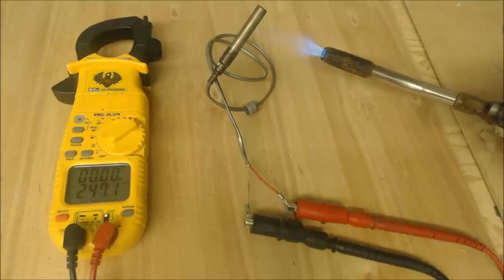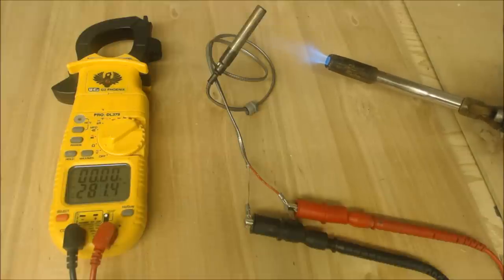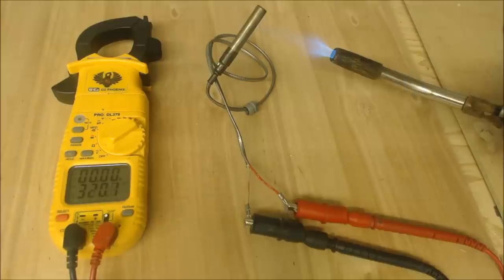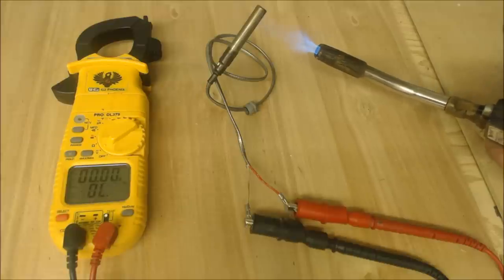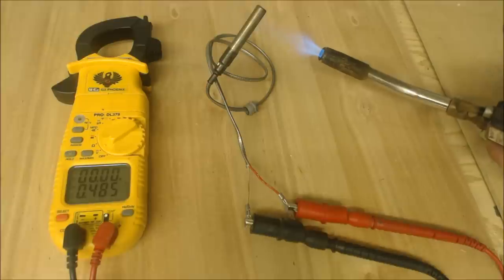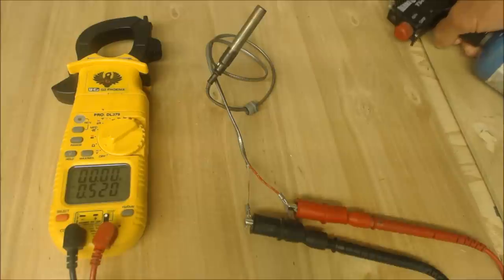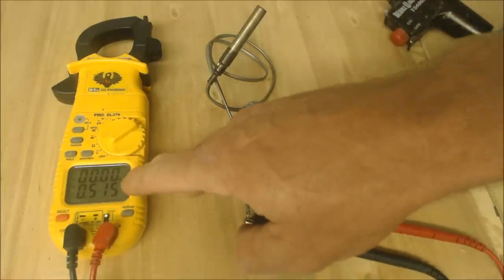So you see that we're at 250 millivolts DC. You just saw the multimeter switch right there. And now we are actually in volts DC because it's now 0.500, so that's actually 500 millivolts DC.